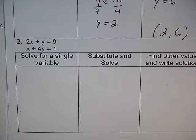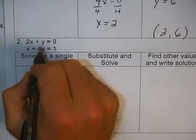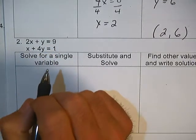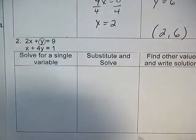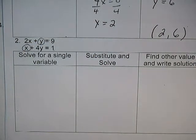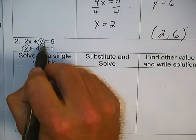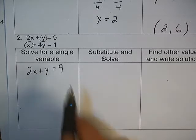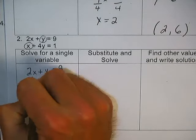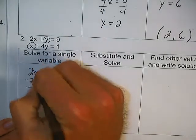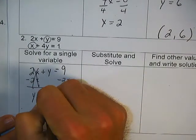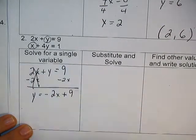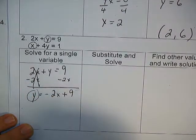Number 2. They do not have a variable by itself right now, so we're going to pick a variable that would be easiest to solve for — one without a coefficient in front of it. We could solve for this y or this x; it doesn't matter. I'm going to solve for y. We have 2x plus y equals 9. To get y by itself, subtract 2x from both sides: 2x minus 2x is zero, leaving y equals negative 2x plus 9. Now the y is by itself.